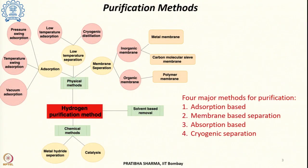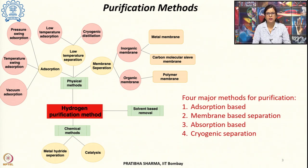Broadly, these can be categorized into 4 different types. In the adsorption-based method, all the impurities or contaminants present in the product gas stream are adsorbed while hydrogen remains. The second method is membrane-based separation, where the membrane selectively allows certain species to pass through it. In absorption-based methods, it is primarily used for carbon dioxide solvent-based removal where CO2 can be removed to obtain hydrogen.